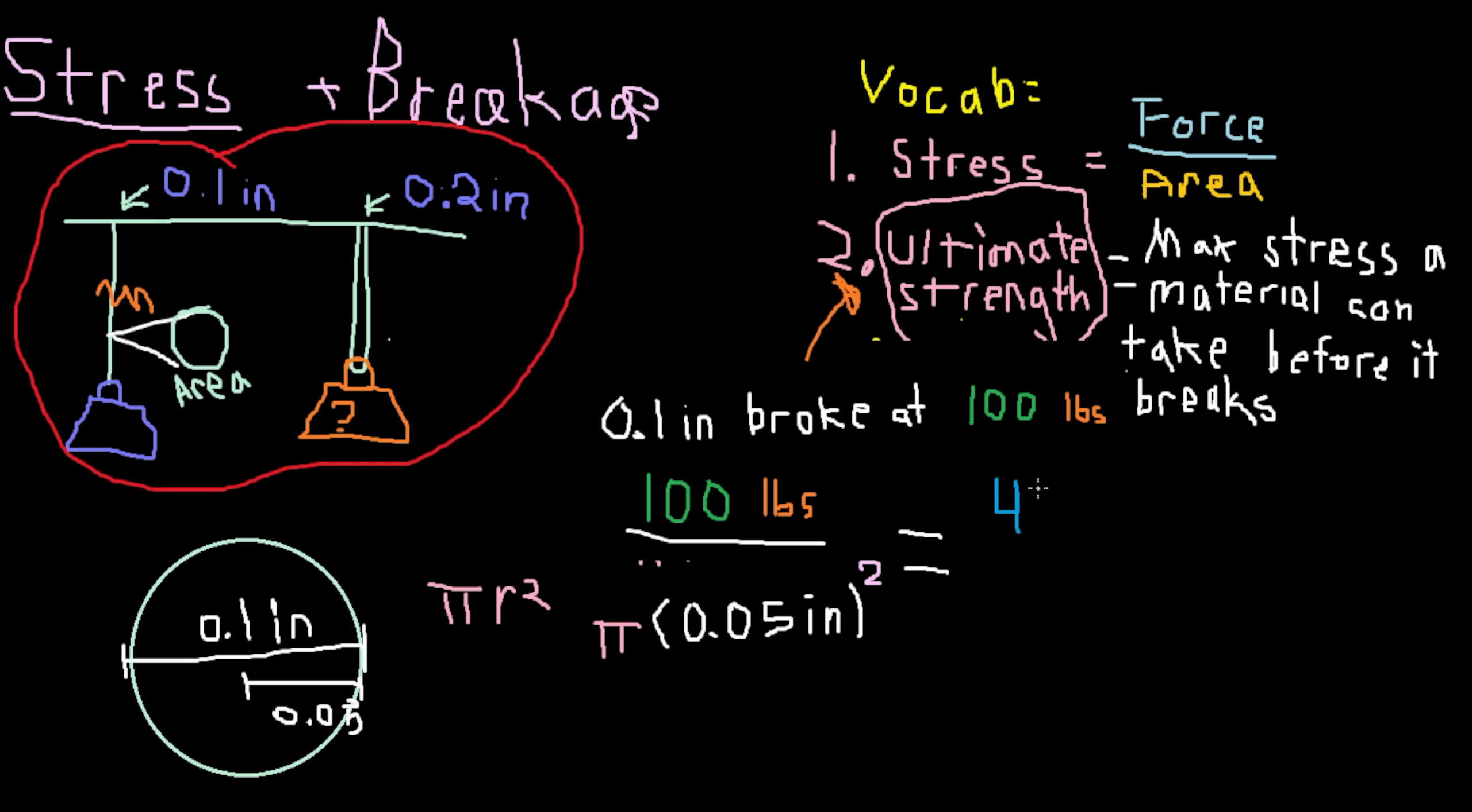So solving for the ultimate strength, we get a value of 40,000 divided by pi, pounds per square inch. The problem says that the strings are both made of the same material, and ultimate strength is a material property, so two objects of the same material will have the same ultimate strength.